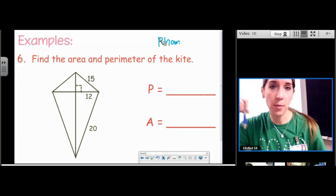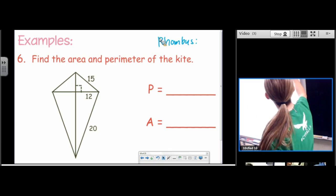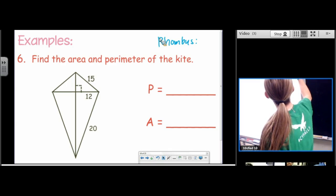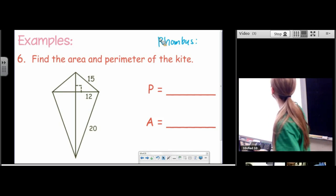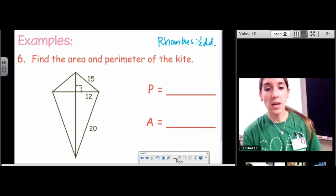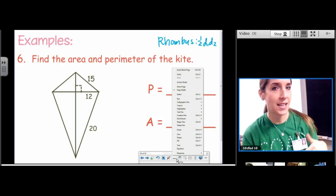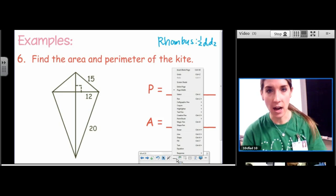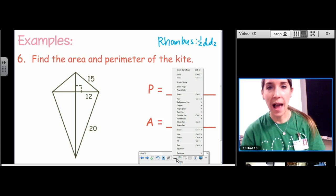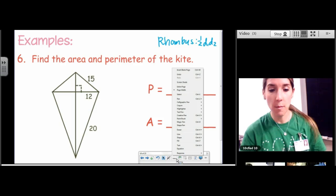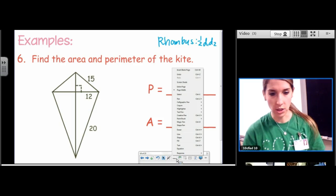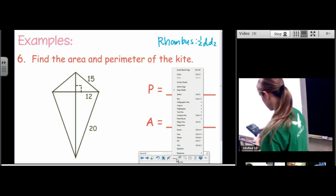You're welcome to have the formula charts out every day, by the way. They're on the website if you need to print a new one. It says rhombus. It says 1 half diagonal 1 diagonal 2. But on the formula chart, it doesn't say anything about a kite. So you don't need to memorize the formula, but you do need to memorize the fact that a kite and a rhombus have the same area formula.